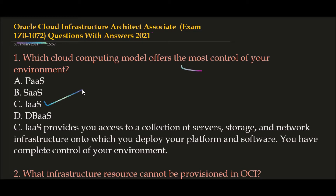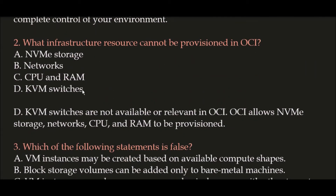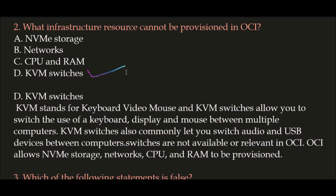Question 2: What infrastructure resource can't be provisioned in OCI (Oracle Cloud Infrastructure)? Option A: NVMe Storage, Option B: Networks, Option C: CPU and RAM, Option D: KVM Switches. The correct answer is Option D, KVM Switches. KVM stands for Keyboard, Video, Mouse. KVM switches allow you to switch the use of keyboard, display, and mouse between computers, but KVM switches are not applicable or relevant in OCI.